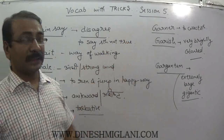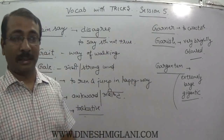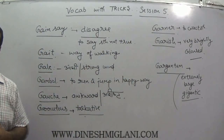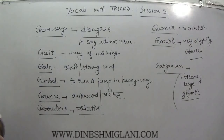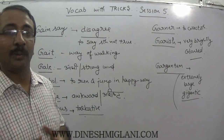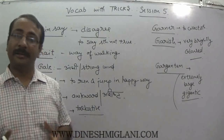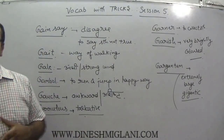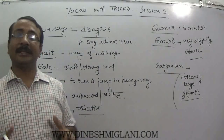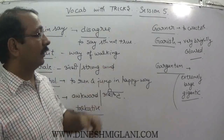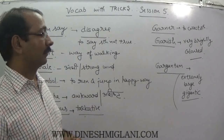Next is garner — gardener; mali goes to his garden and collects fruits every day. Garner means to collect something or to gather something.